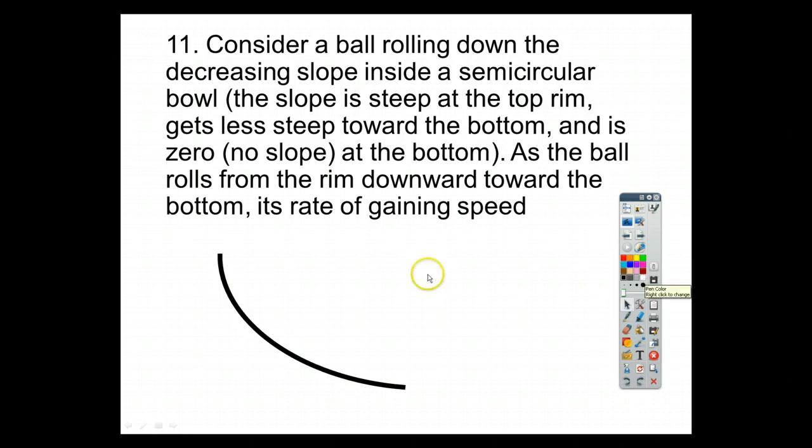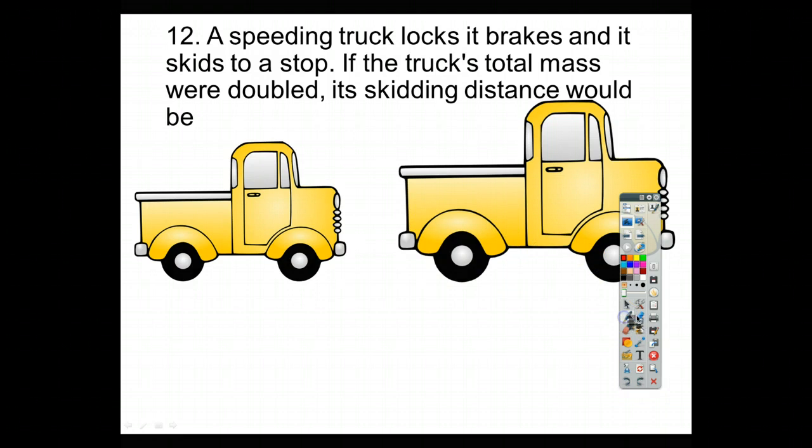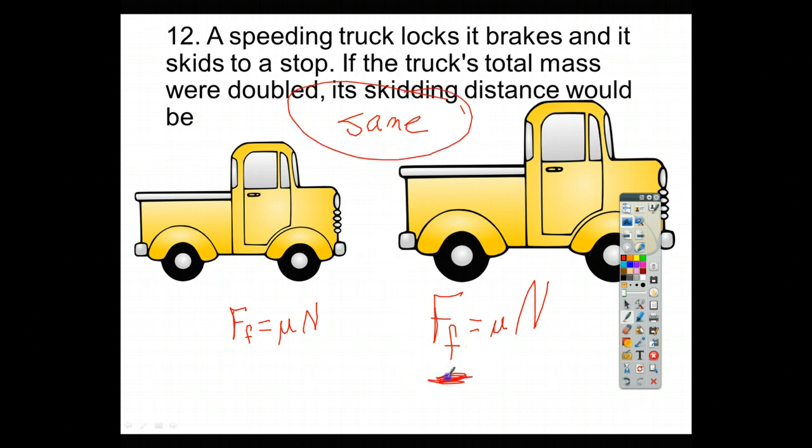For number 12, which is the next question, it says, a speeding truck locks its brakes and skids to a stop. If the truck's total mass were doubled, its skidding distance would be, and actually this one's kind of weird because the answer is, it will be exactly the same. So, when they skid, they will be exactly the same. And here's why. The force of friction to stop this car is equal to mu times n. We know that for the bigger truck, the force of friction is bigger, the mu is the same, because its normal force is bigger. So, the amount of distance that it takes to stop will be exactly the same, because the force on this one is bigger, because it's got more mass. So, actually, they do come to the same stopping distance.